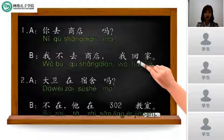好, 第二个. 大卫在宿舍吗? 不在. 他在302教室. Is David in the dormitory? No, he's in the 302 classroom. 他不在家, 他在商店, 在商店买东西.